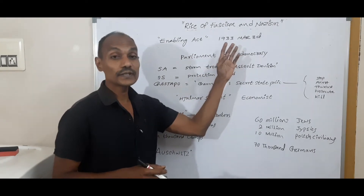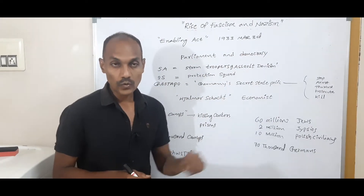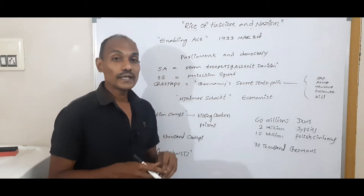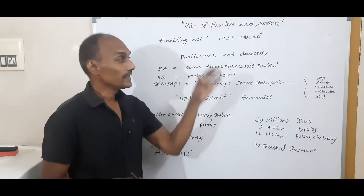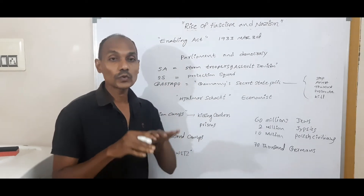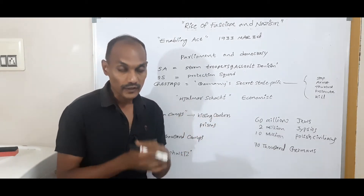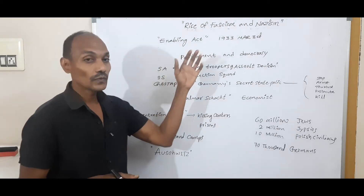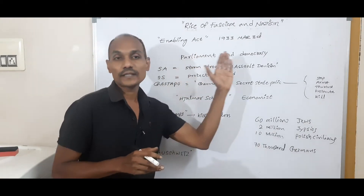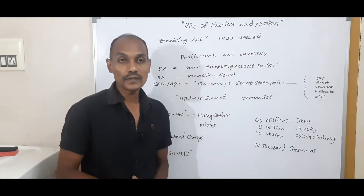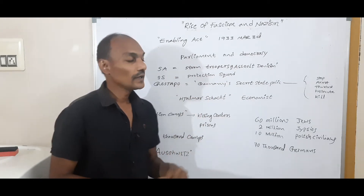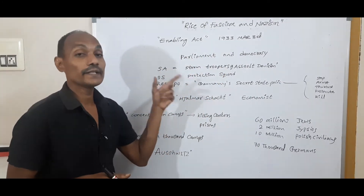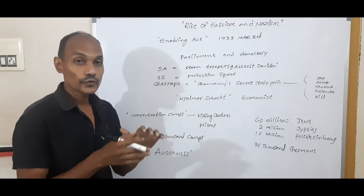According to this act, the Enabling Act established dictatorship in Germany. It gave all powers to Hitler. After the Enabling Act, he set aside Parliament and democracy — he stopped the working of Parliament and democracy.